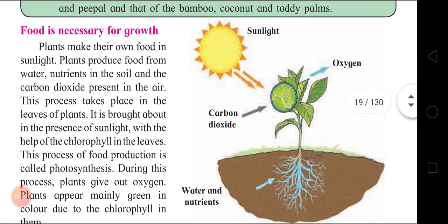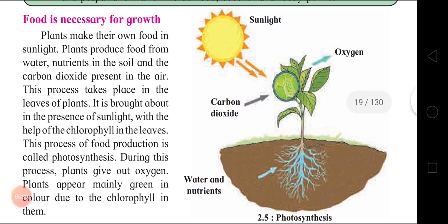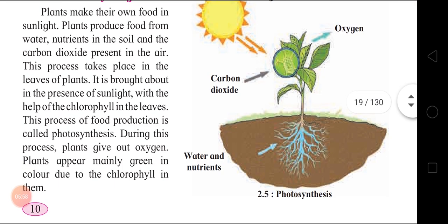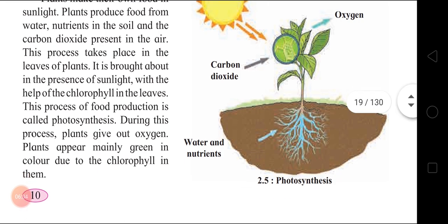Food is necessary for growth. Plants make their own food in sunlight. Plants produce food from water, nutrients in the soil, and carbon dioxide present in the air. This process takes place in the leaves of plants - leaves are the kitchen of a plant. It is brought about in the presence of sunlight with the help of chlorophyll in the leaves. This process of food production is called Photosynthesis. During this process plants give out oxygen. Plants appear mainly green in color due to the chlorophyll in them.